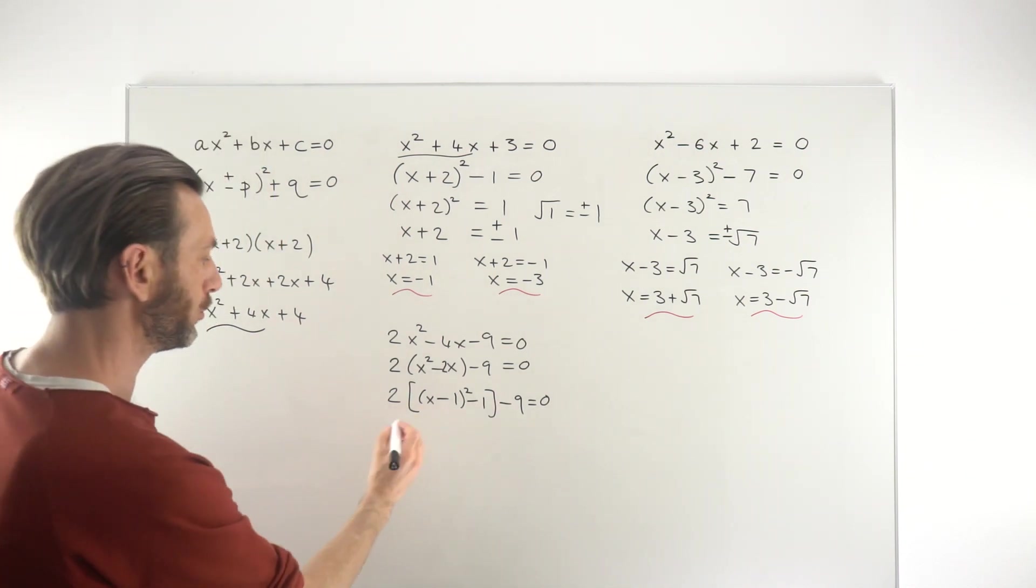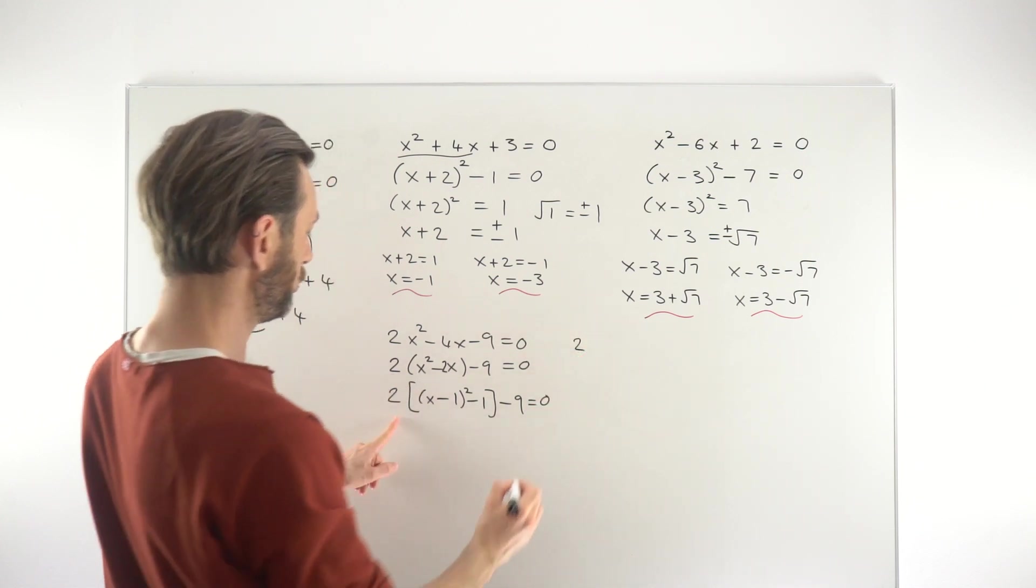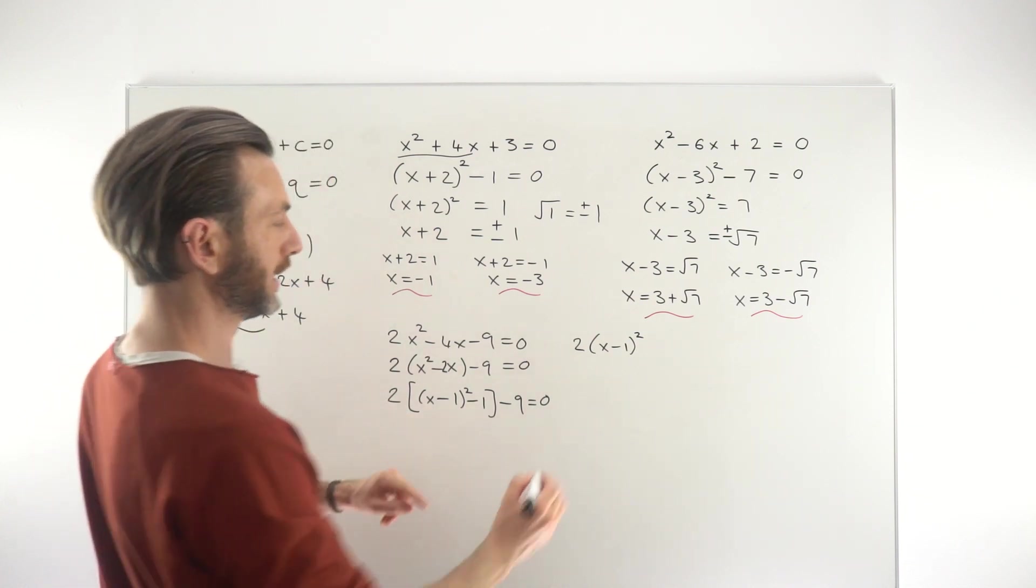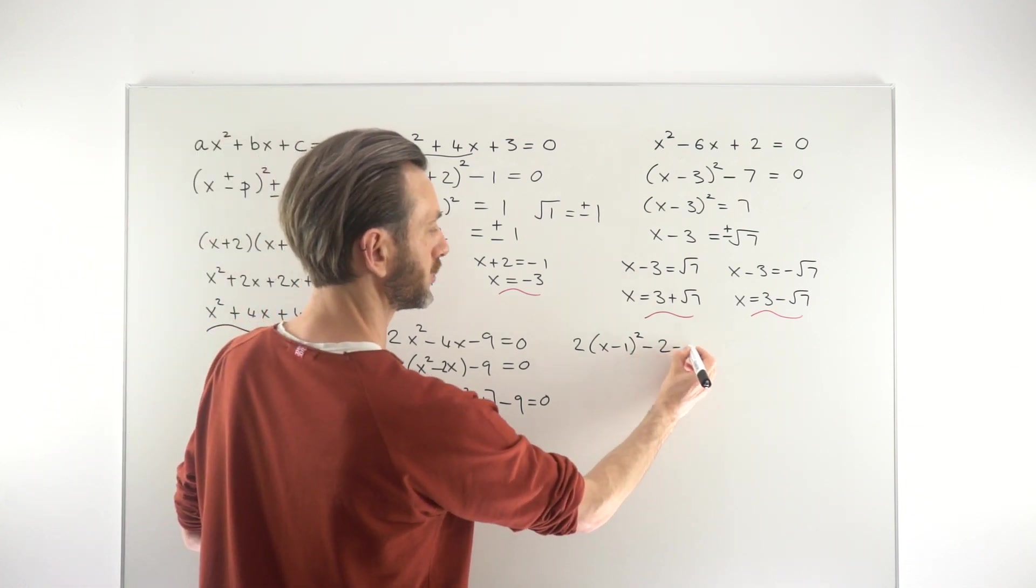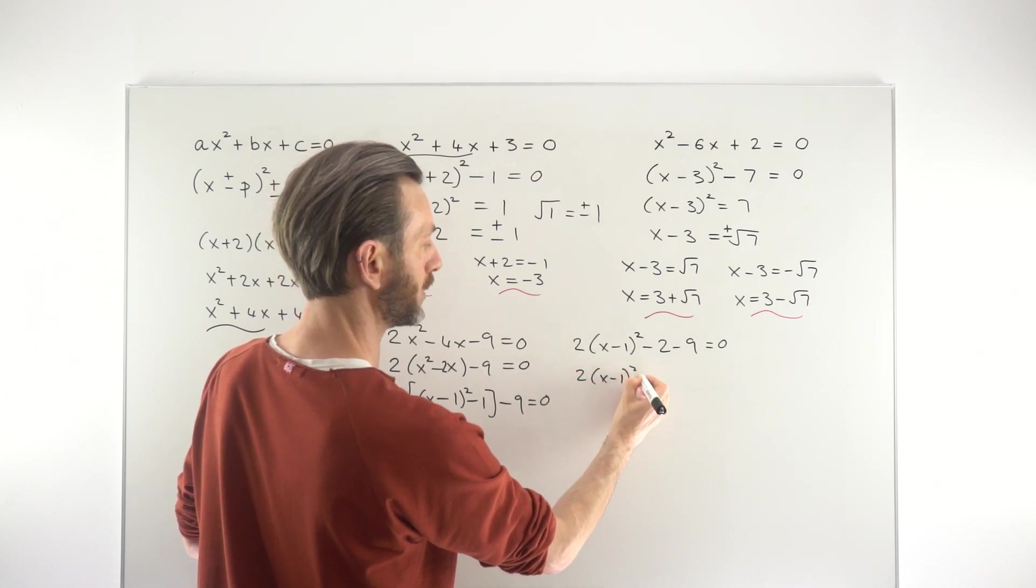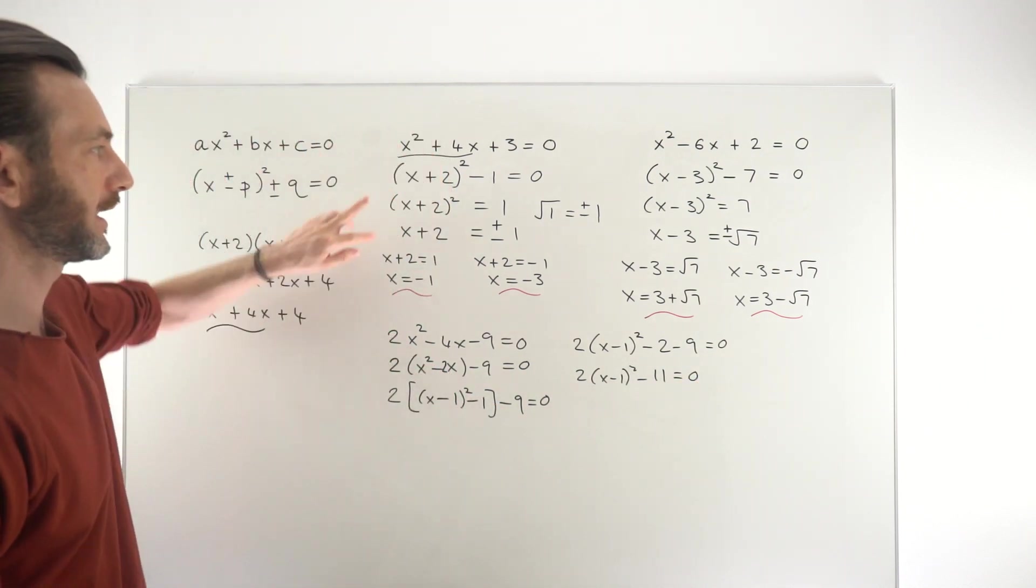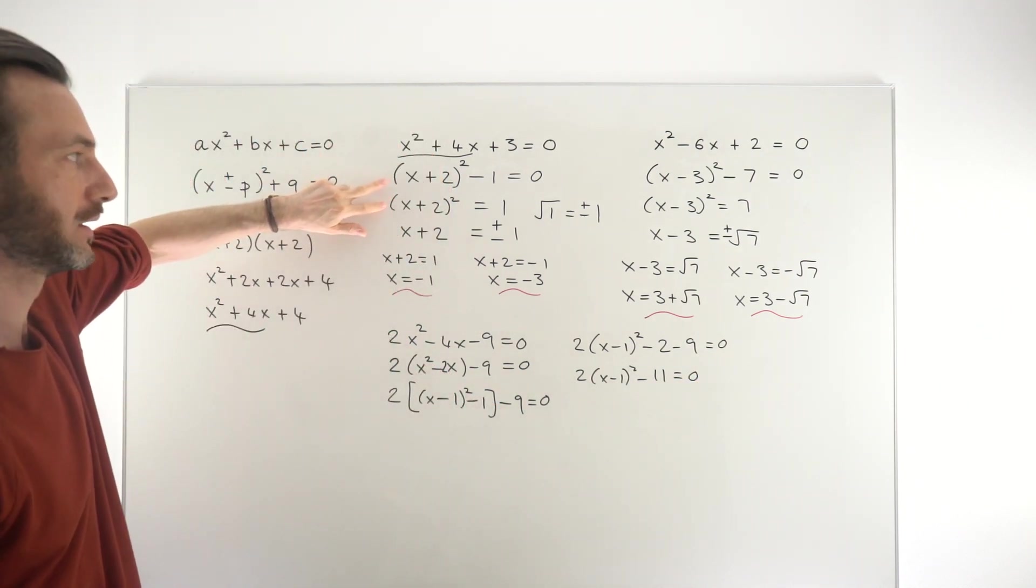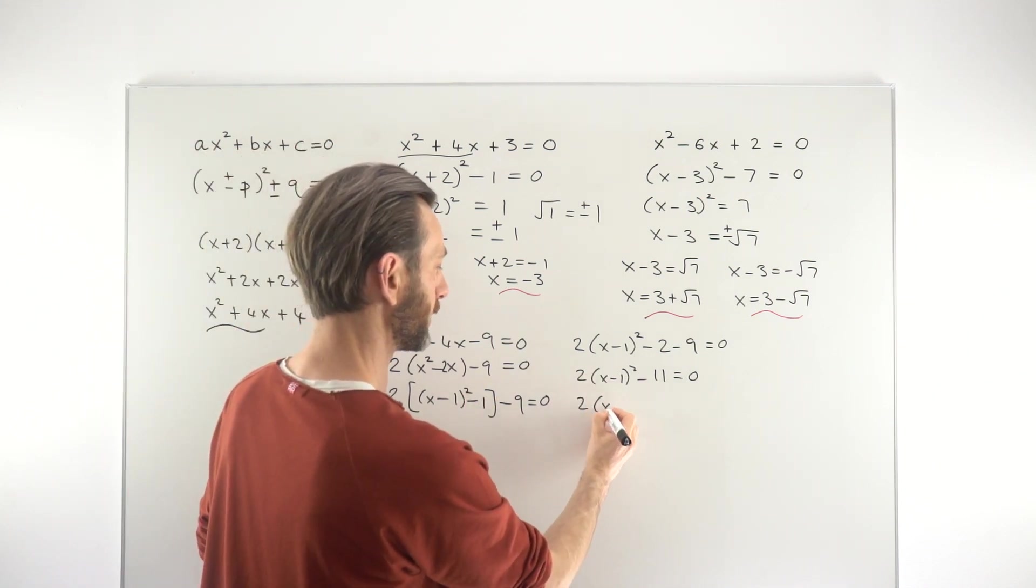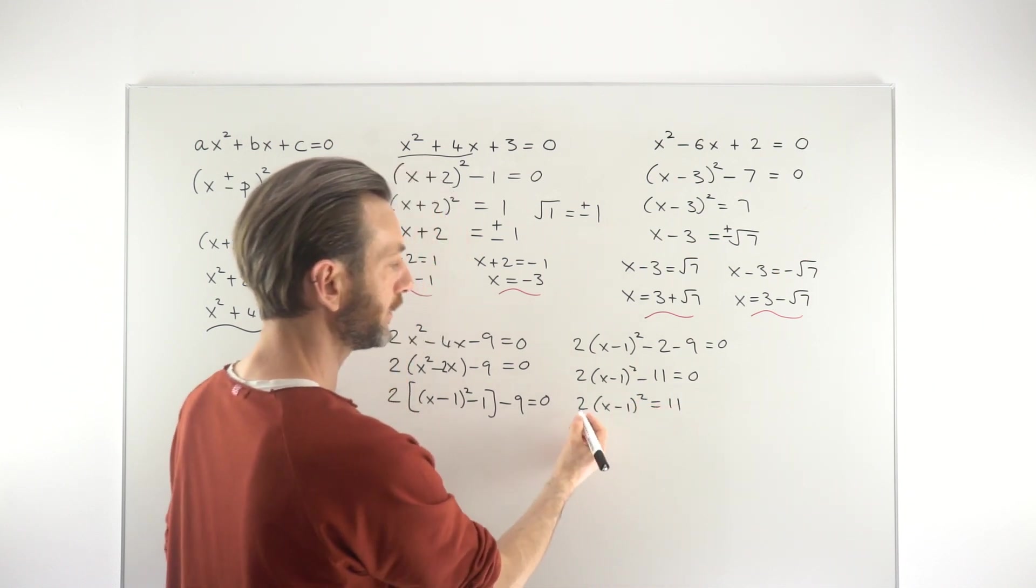Okay, so what we do now is multiply out the bracket. I'm going to move over here because I'm getting a little bit low. So 2 times the round bracket would be 2(x - 1)². 2 × -1 is -2, of course. -9 = 0. So you get 2(x - 1)² - 11 = 0. And that's gotten us back to kind of like around this point here. So moving the 11 to the other side, or the -11, it becomes a positive 11 on the other side. Dividing by 2, and we get (x - 1)² = 11/2.